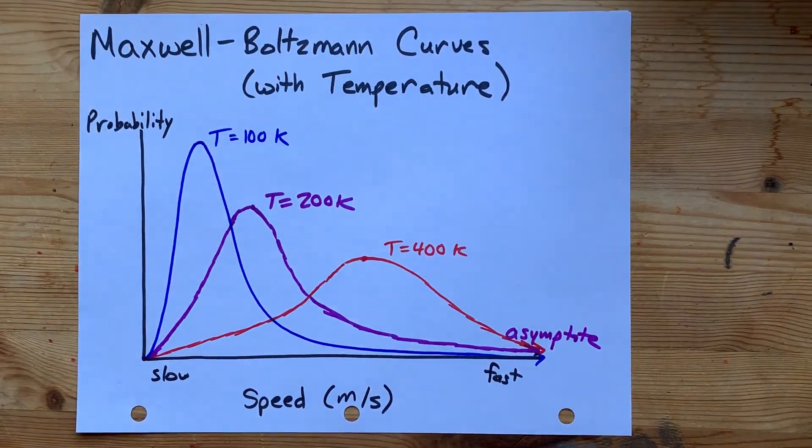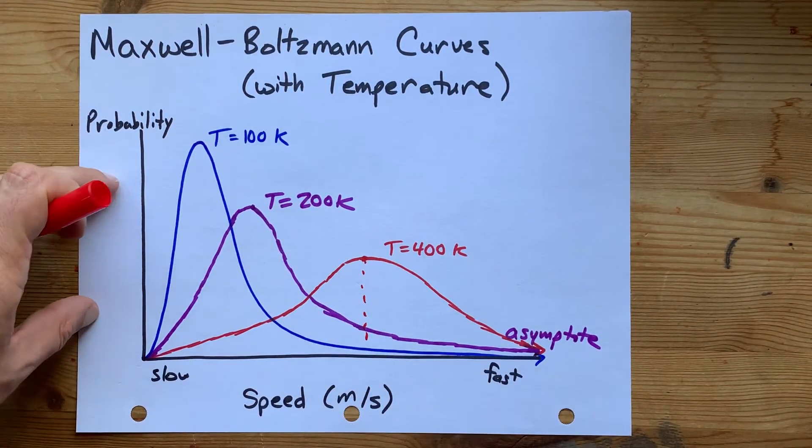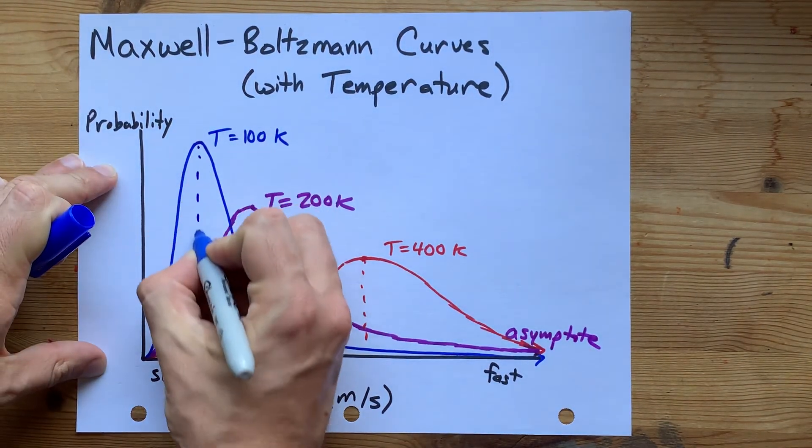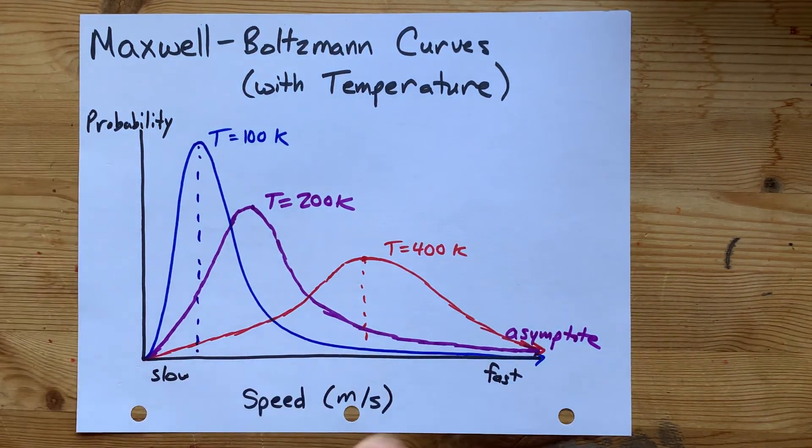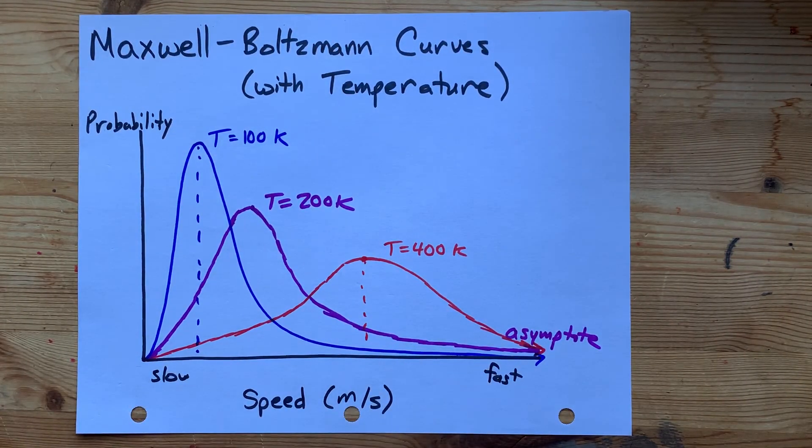At higher temperatures, you're more probably at a high speed. And at low temperatures, you're more probably at a low speed on average. That's the way it goes. Thanks for being with me and best of luck.